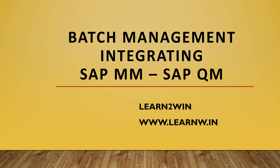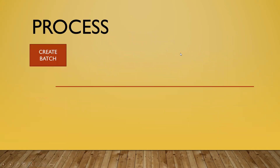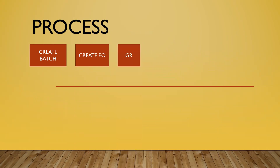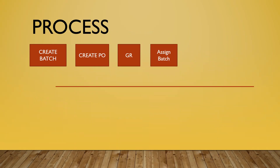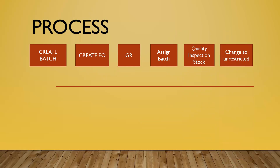Hello everybody, Swamilath here. Today we are going to see batch management integration of material management and quality management. The process is: first, create a batch; second, create a purchase order to buy material from outside; third, do goods receipt; fourth, assign the batch during goods receipt; and fifth, make it a quality inspection stop, then change it to unrestricted in stock after quality inspection.